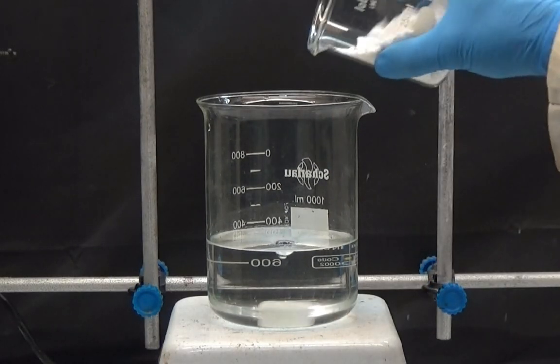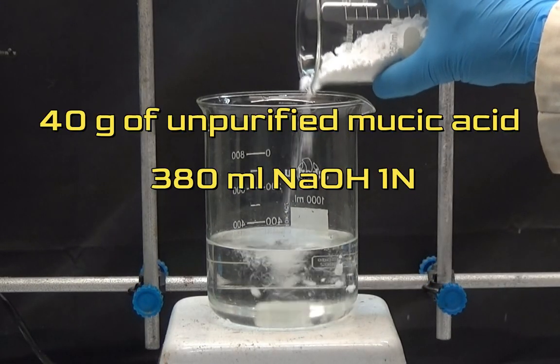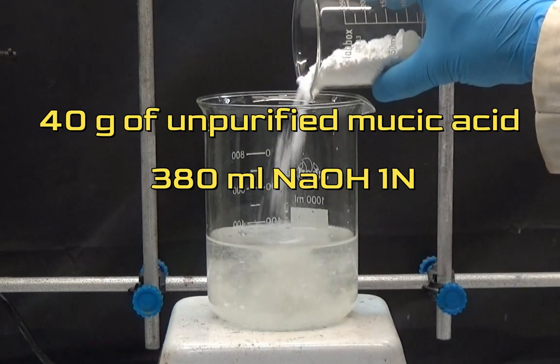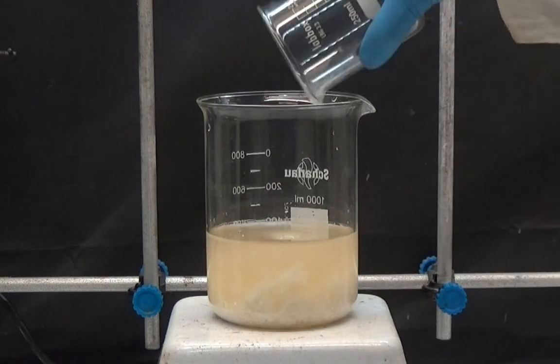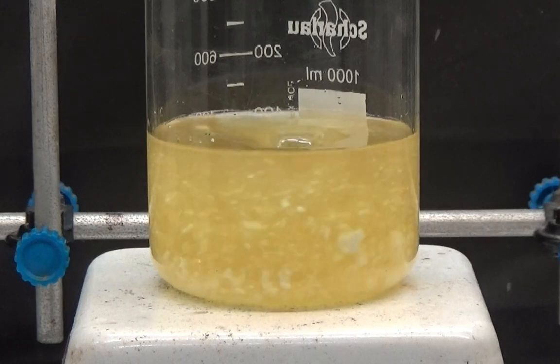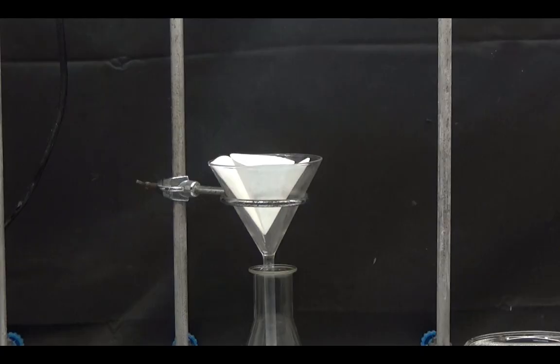During purification, I divide the obtained product into two parts, one of 40g and the other of 36.7g. We dilute 40g of final product in 380ml of normal sodium hydroxide solution.